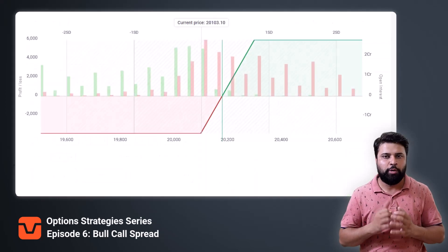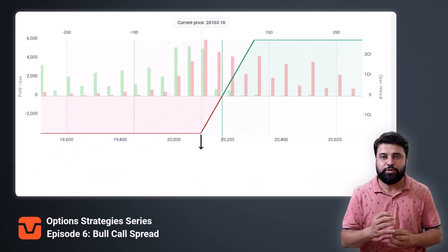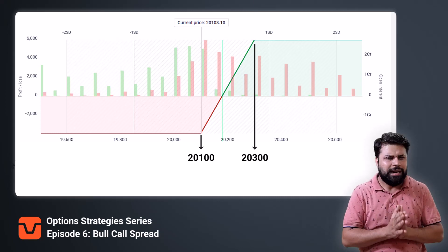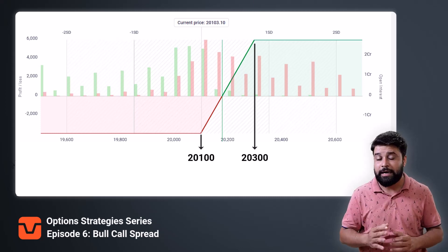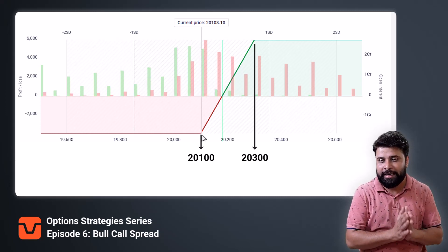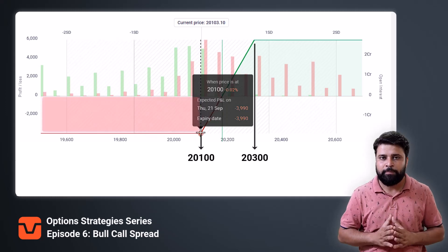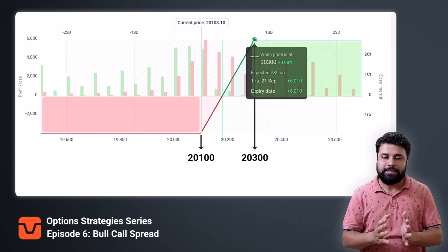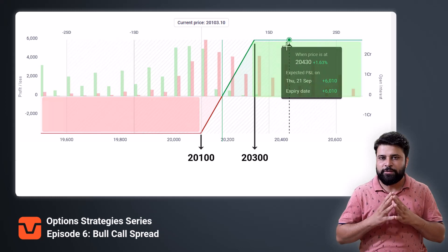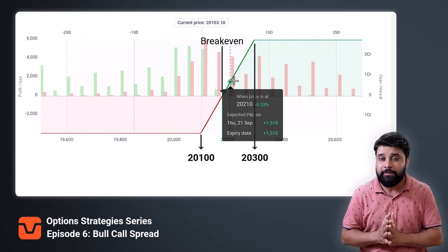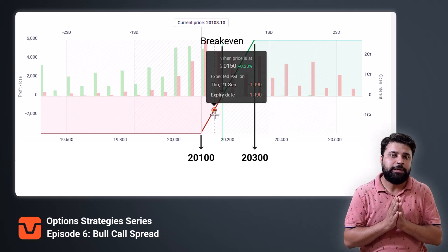Now let's see the payoff chart of the bull call spread. You buy your call option at the 20,100 strike and you sold your call option at the higher strike of 20,300 by receiving the premium. The max loss you can incur is the net premium, and you will incur the max loss when the market expires below the 20,100 level — that is the red zone. Similarly, you will make your max profit if the market expires above the 20,300 strike — the green area. As you can see in the payoff chart, this is your breakeven point. You will make some profit if the market expires above the breakeven and some loss if it expires below.